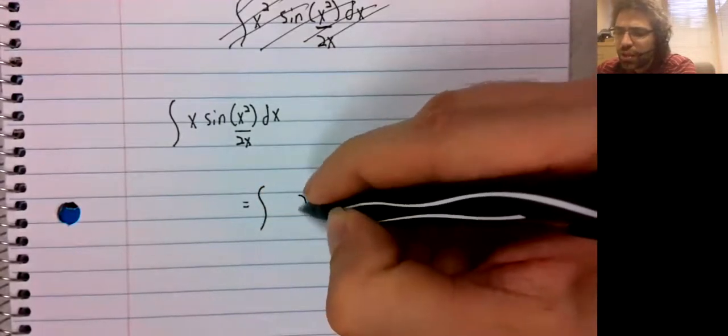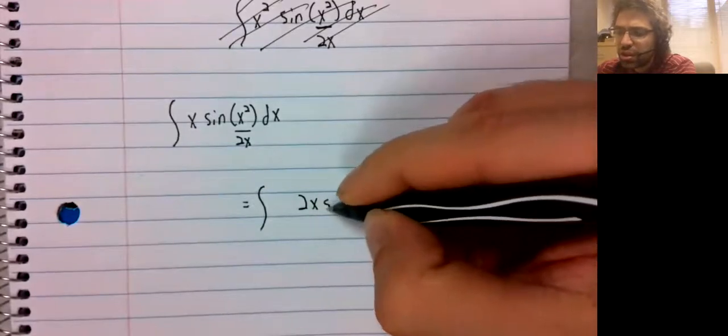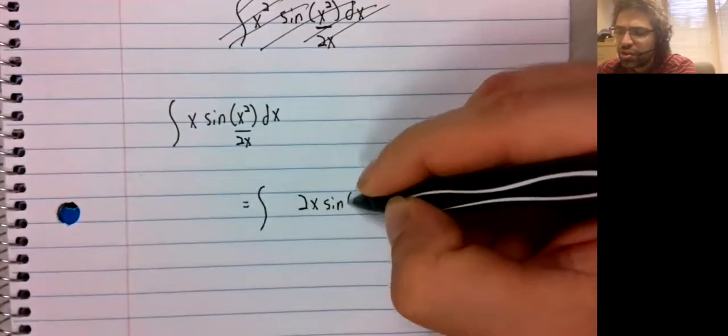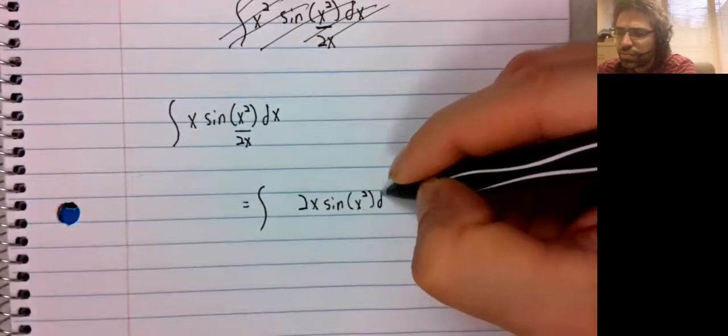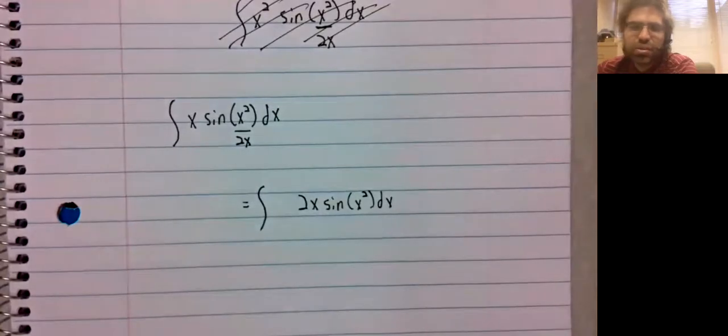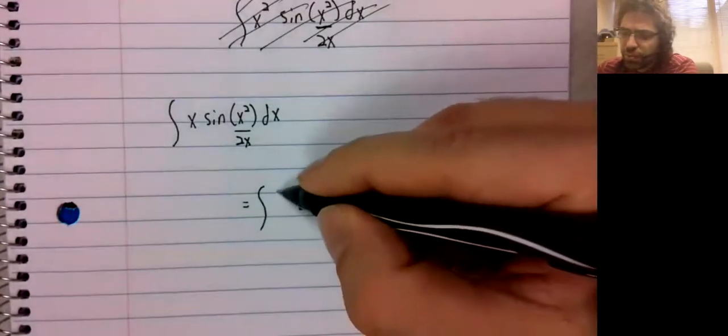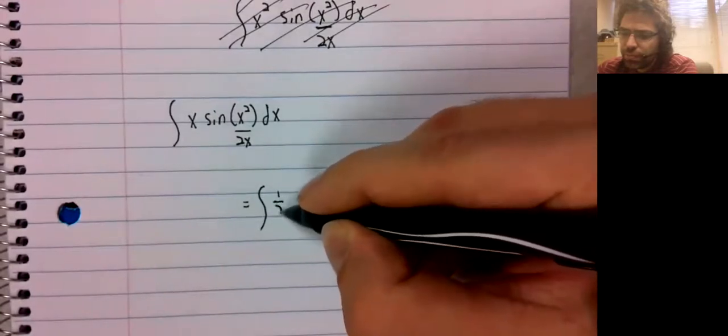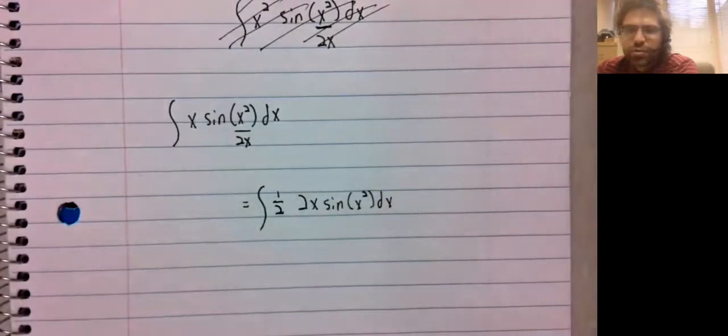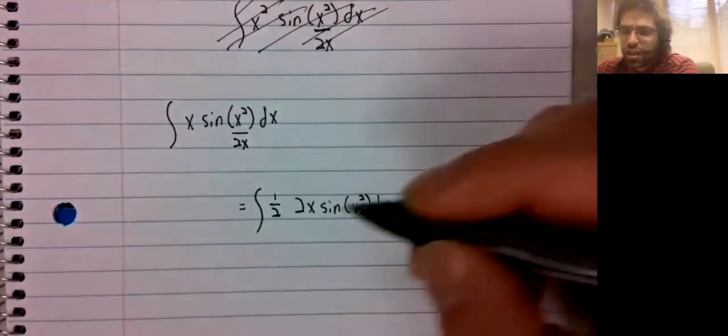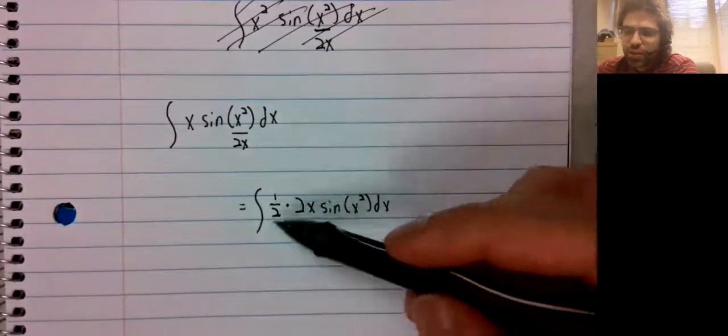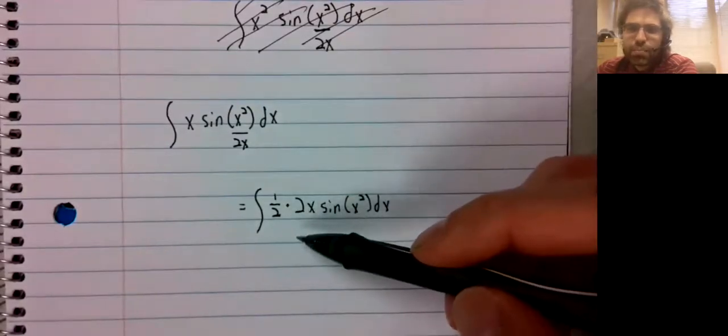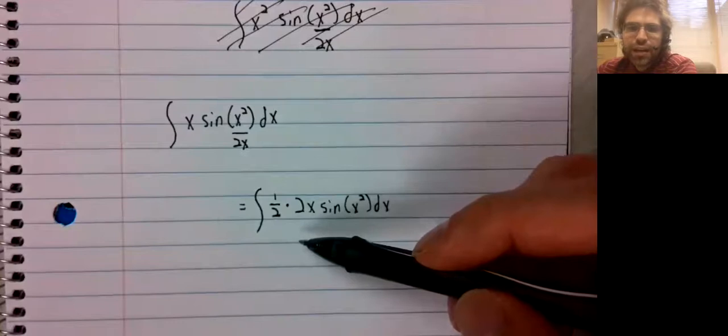We can deal with missing constants by simply inserting them, sort of like completing the square where you add a number and then subtract it.